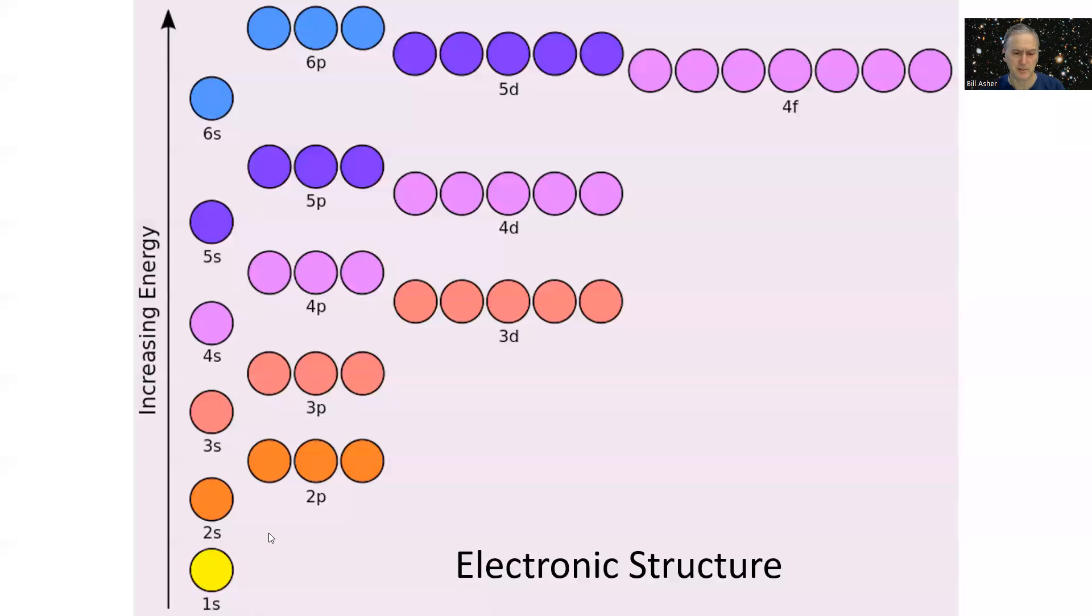Remember, we're going to write them in terms of this energy diagram, where energy of these orbitals is increasing. These numbers correspond to the periods or rows on the periodic table, and these orbitals correspond to the groups or columns.